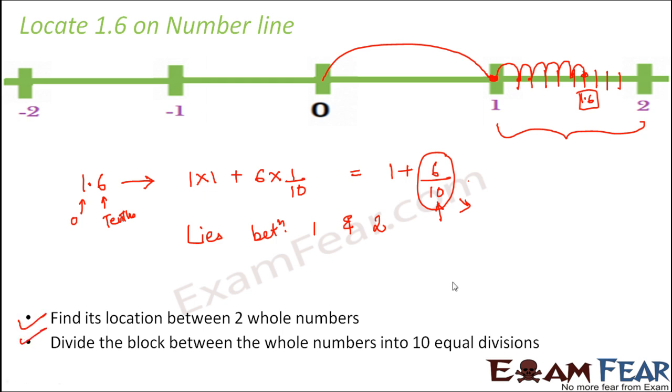Let us consider one more example. Let us consider example two, that is 0.9. If I ask you to locate 0.9, how will you locate it? For that first we expand. Here 0 is at the ones place and 9 is at the tenths place. Therefore this would be 0 times 1 plus 9 times 1 by 10. This is equal to 0 plus 9 by 10.